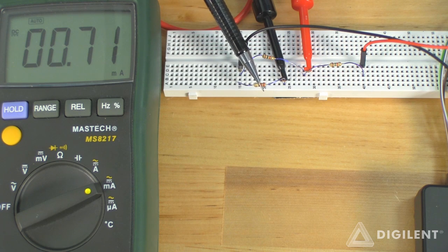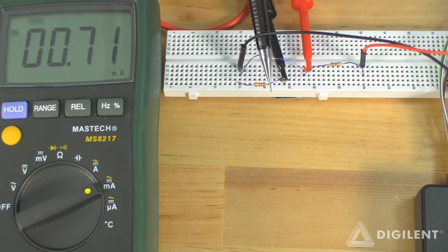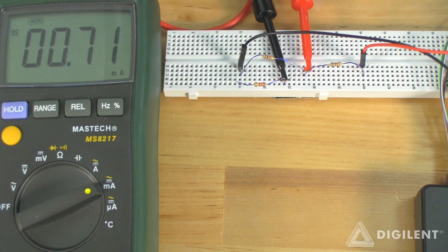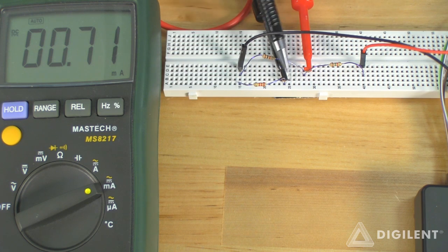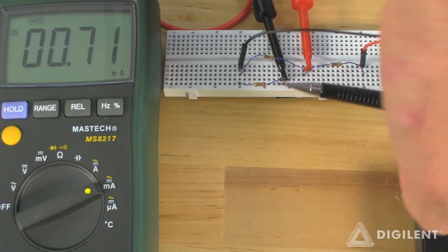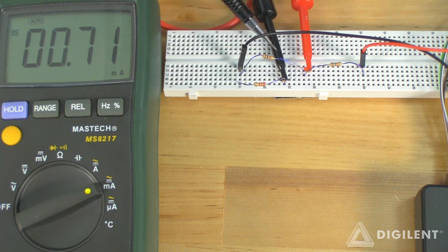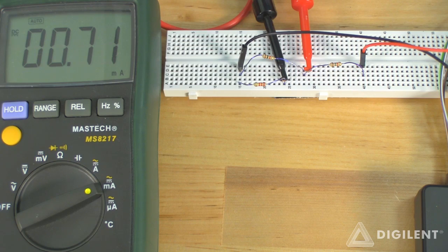Finally, to measure the current through the 2.2 kilo ohm resistor, we break the 2.2 kilo ohm resistor away from this node, place the ammeter between these two terminals. For this resistor, positive current is in this direction, so this is our comm terminal and this is our ampere terminal. We get about 0.71 milliamps of current through this resistor.